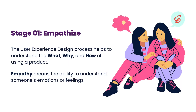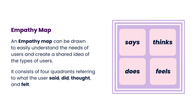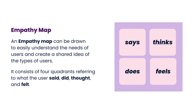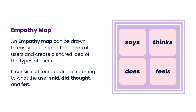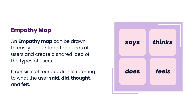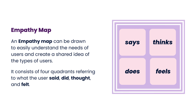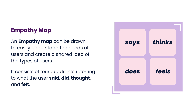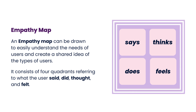Stage 1: Empathize. The user experience design process helps to understand the what, why, and how of using a product. Empathy means the ability to understand someone's emotions or feelings. An empathy map can be drawn to easily understand the needs of users and create a shared idea of the types of users. It consists of four quadrants referring to what the user said, did, thought, and felt.